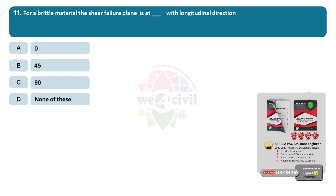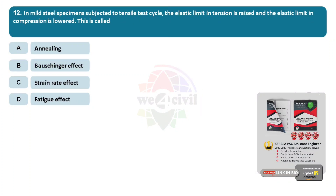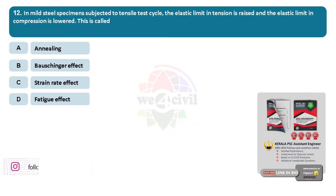For a brittle material, the shear failure plane is at dash degrees with longitudinal direction. Option A, 0. Option B, 45. Option C, 90. Option D, none of these. Answer is Option B, 45 degrees. In mild steel specimens subjected to tensile test cycle, the elastic limit in tension is raised and elastic limit in compression is lowered. This is called dash. Options: A, annealing. B, Bauschinger effect. C, strain rate effect. D, fatigue effect. Answer is Option B, Bauschinger effect.